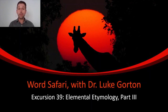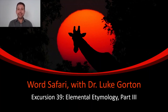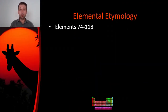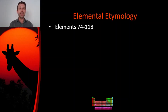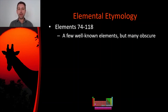Welcome back to another episode of Word Safari. This is the third episode in a three-part series on elemental etymology, where we look at the etymologies of all the elements on the periodic table. We're going to look at the final 45 elements here on the periodic table in this episode, which comprises elements 74 through 118. We've already looked at the first 73 in the last two episodes. You may have heard of some of them.